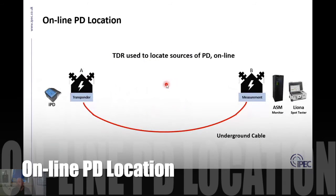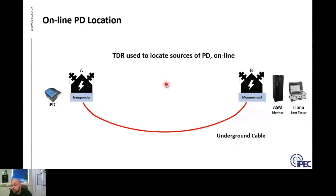Okay, so next I'm going to discuss how we locate PD online - how we do location of PD on an underground cable whilst it is live. The way we locate on an underground cable is on the other end of the cable. So this is our measurement point, this is where our monitoring system or test equipment is installed.